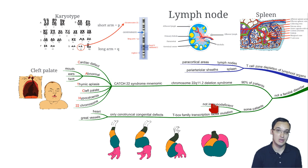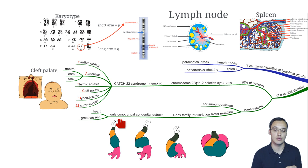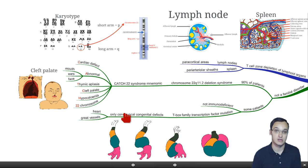Some patients will not actually have immunodeficiency. They only have a conotruncal defect — a problem with the heart and great vessels. Here is the heart, and this is how it looks like in the beginning as it folds into the heart shape. During this folding, you can have a defect, and therefore some babies will have a conotruncal congenital defect.